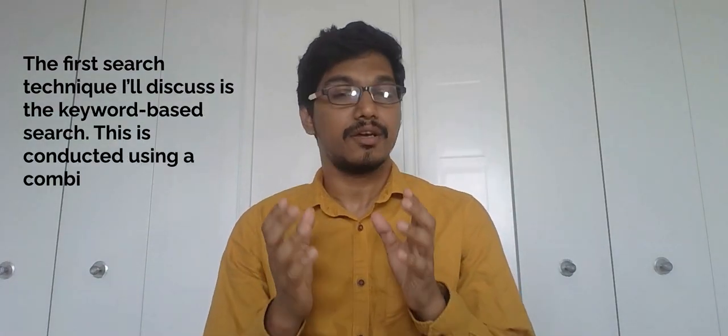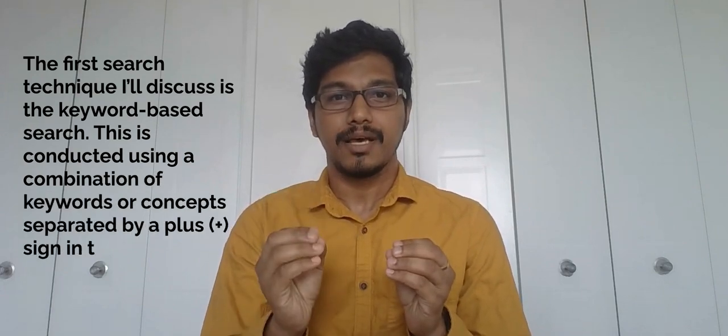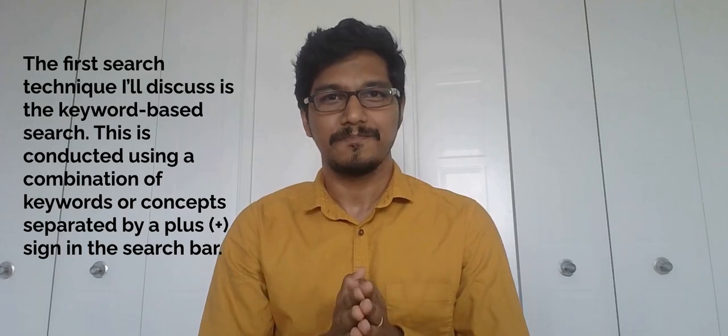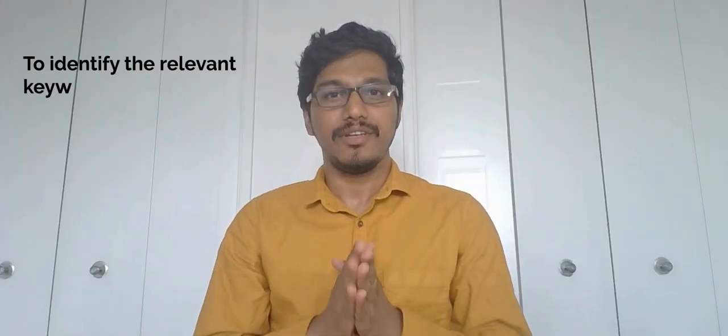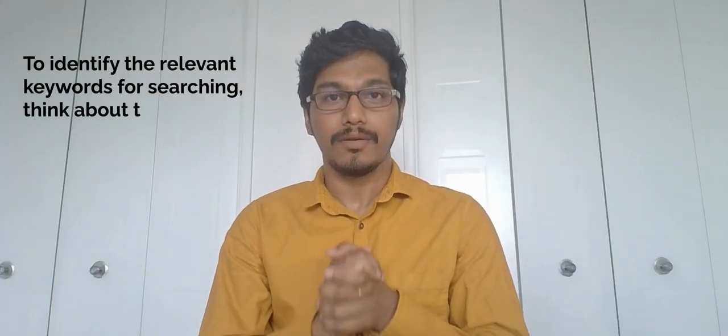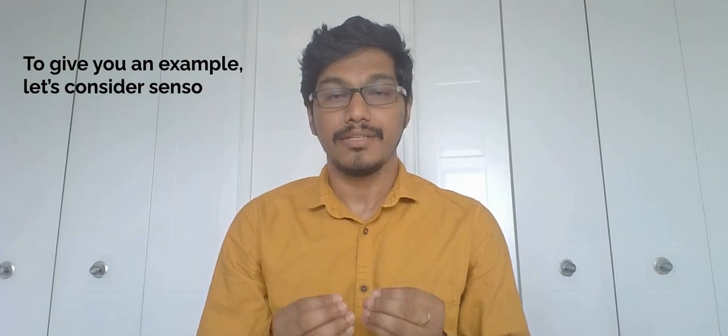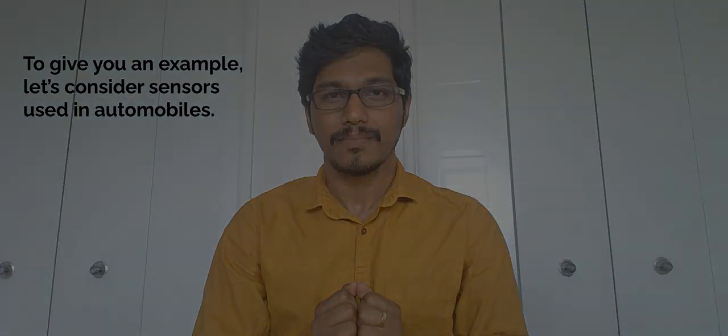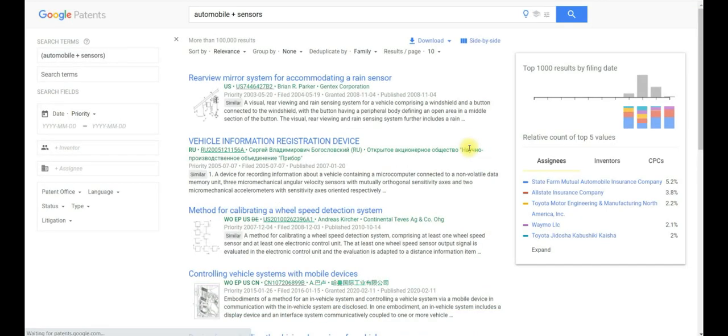The first search technique I will discuss is the keyword-based search. This is conducted using a combination of keywords or concepts separated by a plus sign in the search bar. To identify the relevant keywords for searching, think about the technology or the novelty of your invention. To give you an example, let's consider sensors used in automobiles. As you can see here, Google has identified more than 100,000 search results.